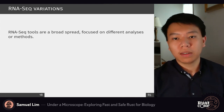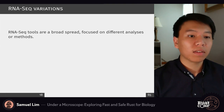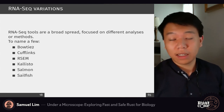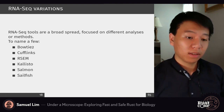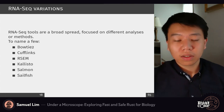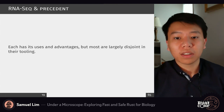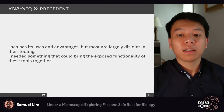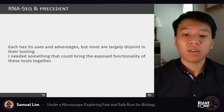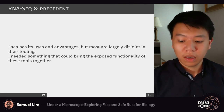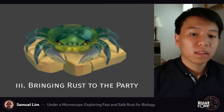RNA-seq tools are a broad spread. They can be focused on many different analyses or methods. Some are concerned with quantification, categorization, and analysis of expression of different genes and RNA sequences. Each has its own uses and advantages, but most are largely disjoint in terms of programmatic tooling. We needed something that could bring together the command arguments, positional arguments, and general command line interface of these many different tools into one unified surface — and that's where Rust comes in.